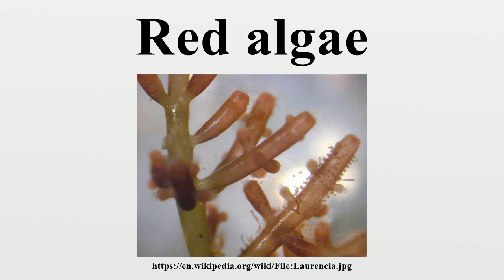The resulting conchospore germinates to form a tiny prothallus with rhizoids, which develops to a cm-scale leafy thallus. This too can reproduce via monospores, which are produced inside the thallus itself. They can also reproduce via spermatia, produced internally, which are released to meet a prospective carpogonium.